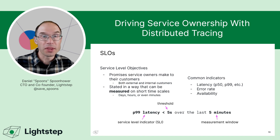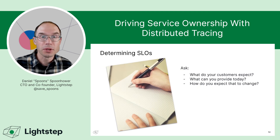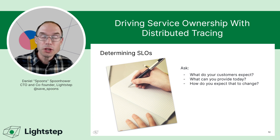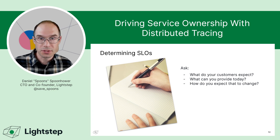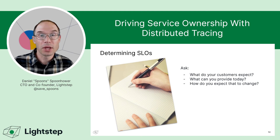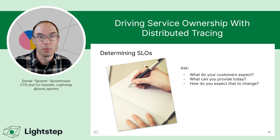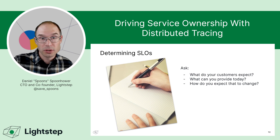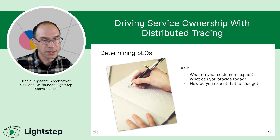There are many other kinds of indicators that might be important for your business — error rate, availability, durability, or throughput. But the way you determine SLOs is the same: ask what your customers expect, what promises you've made either implicitly or in writing, and what you can provide today given the current state of your software. You might set a tighter bound if you have time for reliability improvement, or a looser one if a big feature is coming and reliability work will be limited.